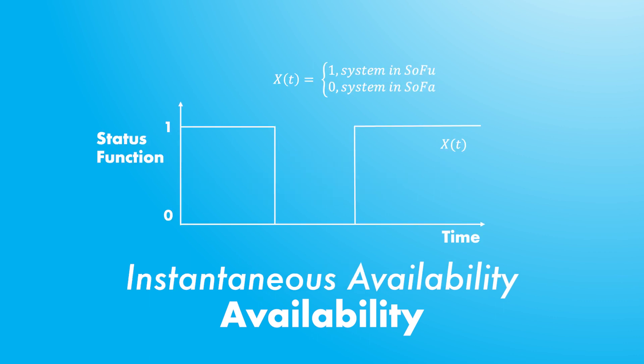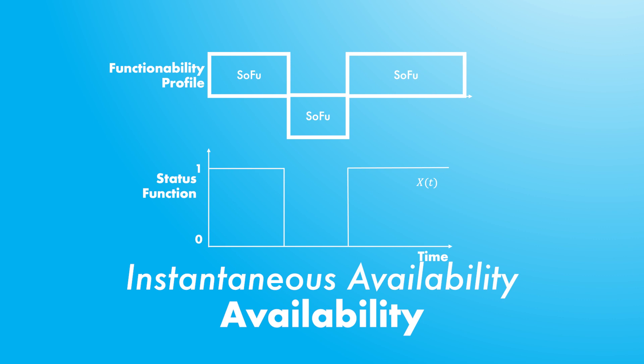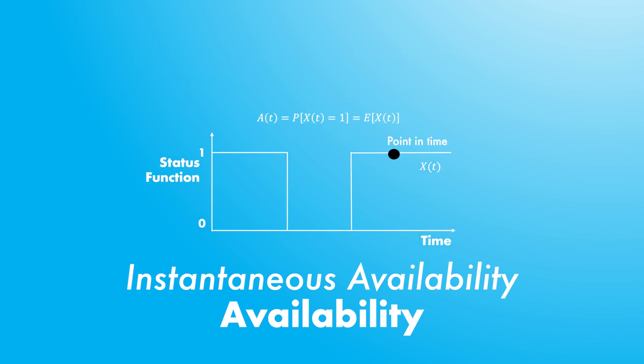In order to define instantaneous availability, we need to define the status function x(t). x(t) equals 1 when the system is functioning — in a state of functioning (SOFU) — and is defined as 0 when we are in maintenance, in a state of failure. This function captures the functionability profile. The instantaneous availability at a specific time is represented by the probability that the status function at that time equals 1, which can be calculated by the expected value of the status function at that time.